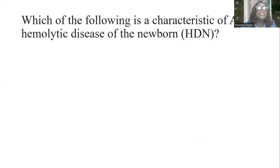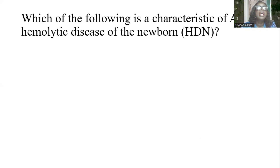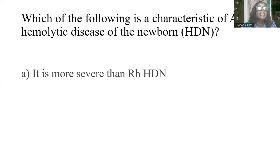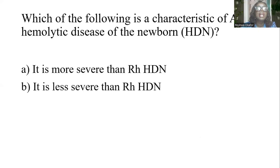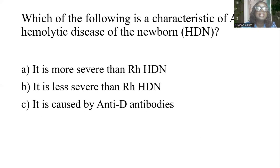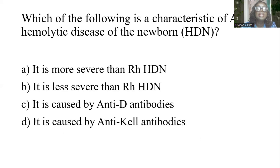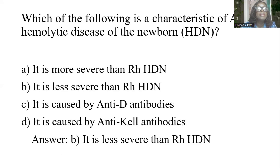Which of the following is a characteristic of ABO hemolytic disease of the newborn? A) It is more severe than Rh-HDN. B) It is less severe than Rh-HDN. C) It is caused by anti-G antibodies. D) It is caused by anti-Kell antibodies. The answer is B: it is less severe than Rh-HDN.